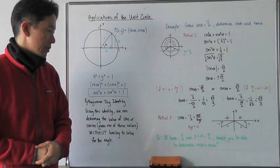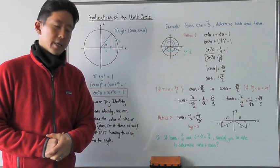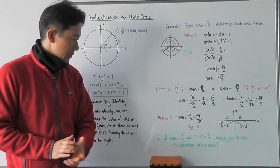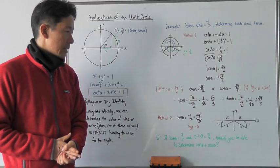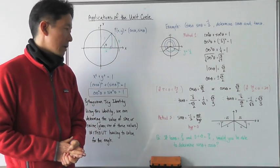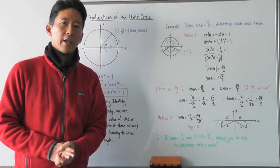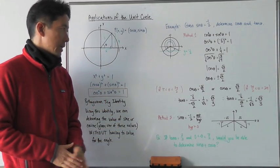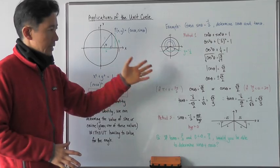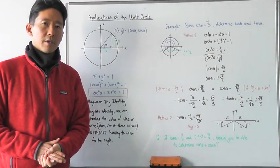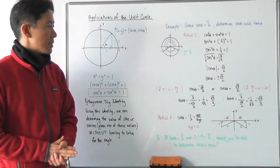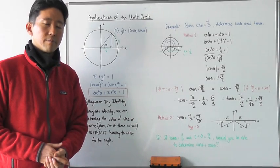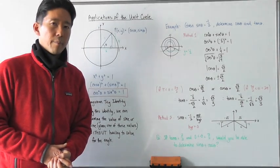Here's a question for next time: if tangent of theta equals two-thirds and theta is a first quadrant angle, would you be able to determine what sine theta and cosine theta are? We'll take a look at that question, along with anything else that might be a point of discussion, the next time we meet. See you next time.